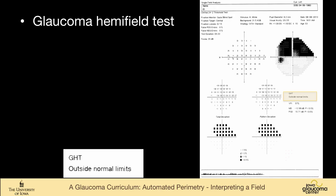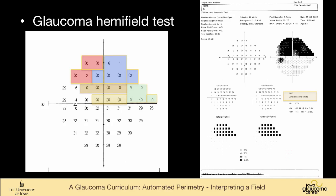So the glaucoma hemifield test, we can see here it says outside normal limits, and what this test does is to take blocks of test points above and below the horizontal and compares them. So if there is arcuate loss, the glaucoma hemifield test will be abnormal because there is, as you can see, and this is a great example, it's less than 0, 20, less than 0, where below it's 31, 31, 32. So clearly a big step off over the horizontal.